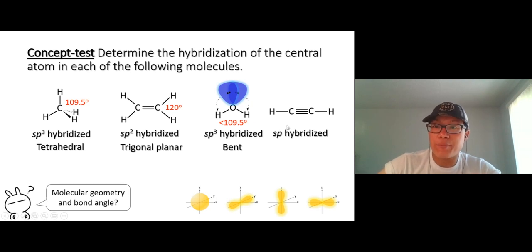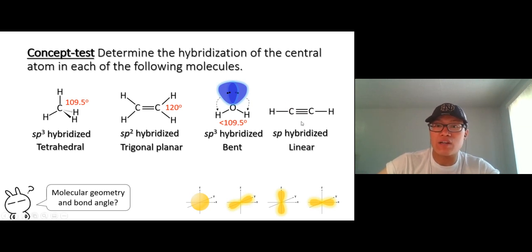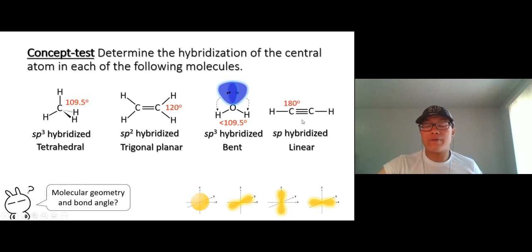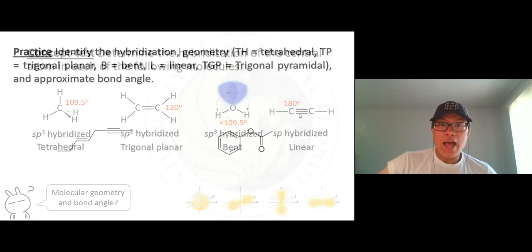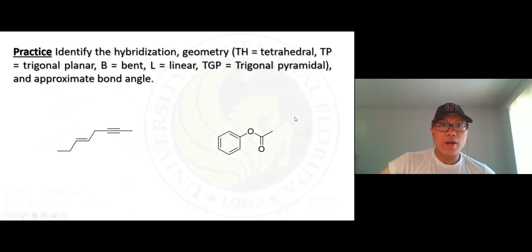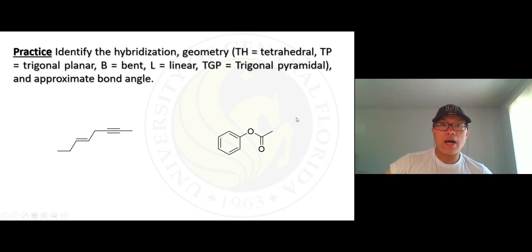Last one: sp hybridization has two electron groups. The best geometry is linear and the bond angle is 180 degrees.